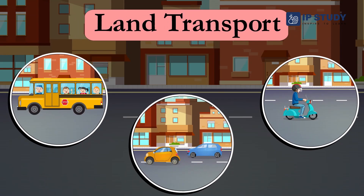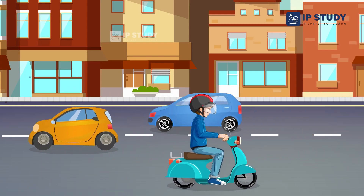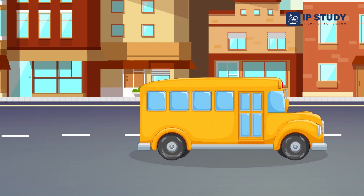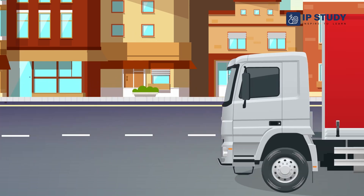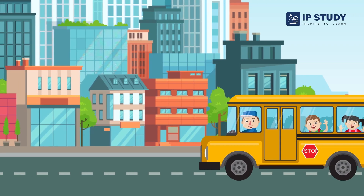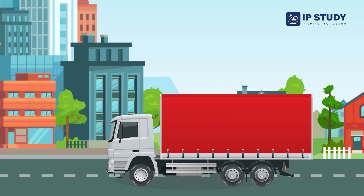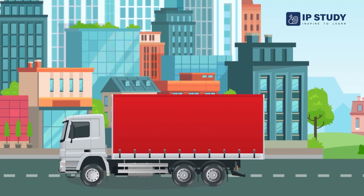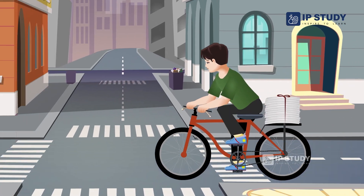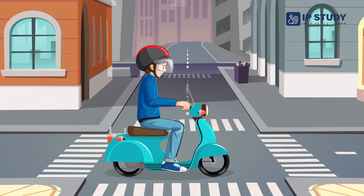Land transport. Land transport offers surface transport through various vehicles. Some means of land transport are bus, car, truck, train, bicycle, scooter, etc.